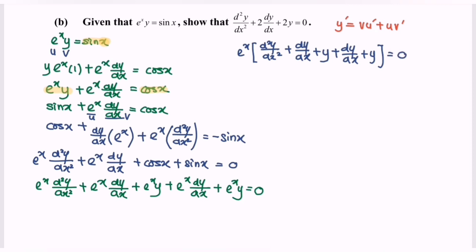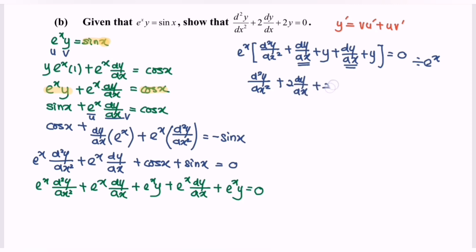Next, divide both sides by e^x. So we will have: second derivative plus 2·(dy/dx) plus 2y equals 0. Shown.